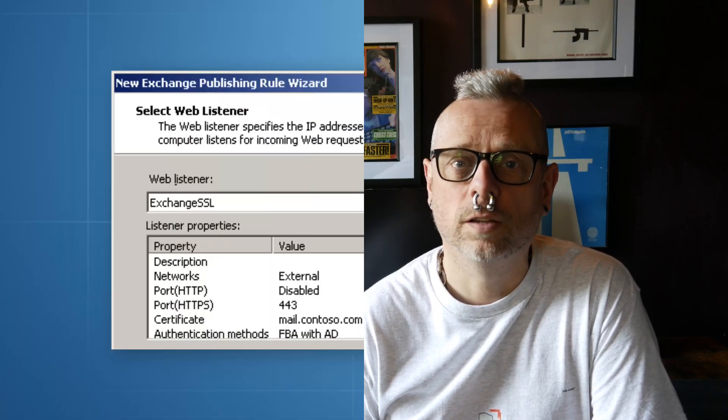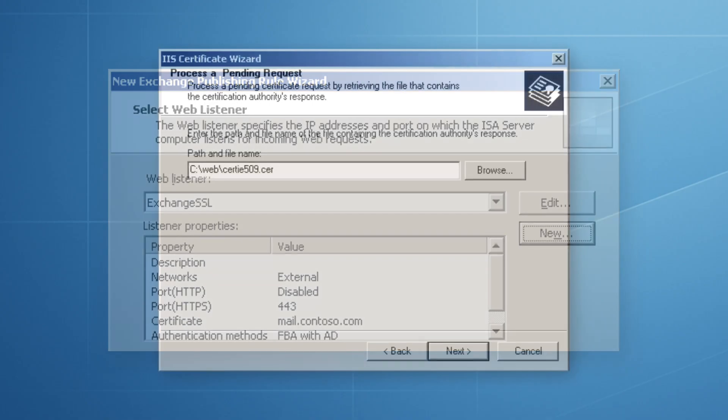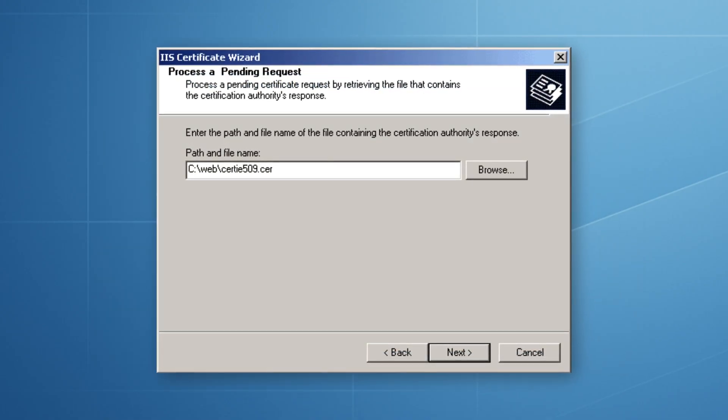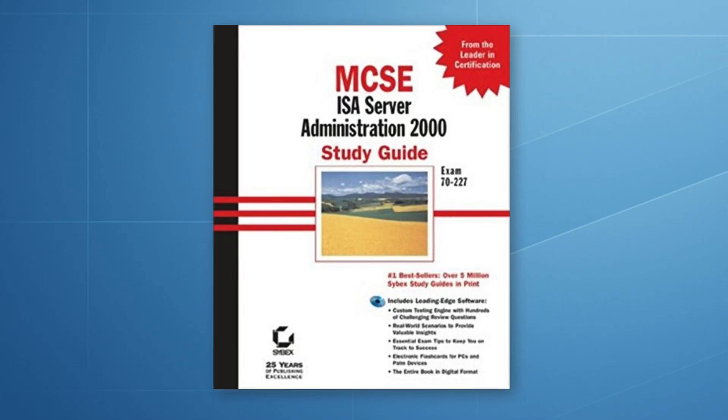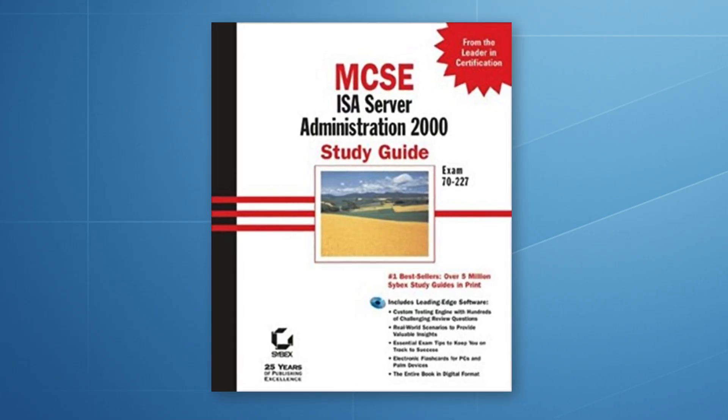ISA Server 2000 really transformed how an administrator handled internet access. Everything was in Windows in the GUI. You could use Active Directory users and groups to simplify access, servers could be published using wizards, and there were no complex command lines or CLI to learn. It was a powerful product but not perfect. The new GUI was the MMC in Windows 2000, understanding publishing rules was complex at times, and it introduced SSL certificates to many administrators for the first time. But despite the learning curve, it gave Microsoft administrators a true security tool that could compete with Cisco and Checkpoint.